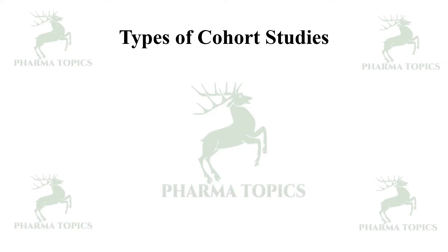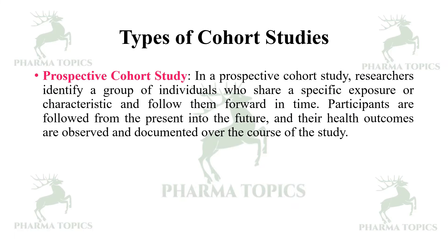There are two types of cohort studies. In a prospective cohort study, researchers identify a group of individuals who share a specific exposure or characteristic and follow them forward in time. Participants are followed from the present into the future, and their health outcomes are observed and documented over the course of the study.